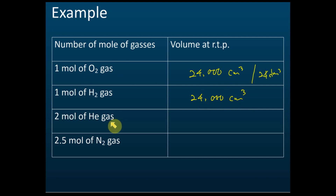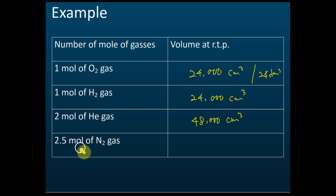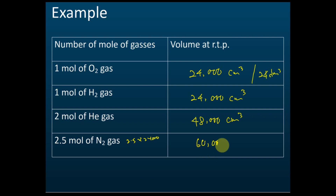Two moles of helium gas at RTP gives 48,000 cm³. You don't need to know what kind of gas it is — as long as it's a gas, one mole is always 24,000 cm³ and two moles is always 48,000 cm³ at RTP. For 2.5 moles of nitrogen gas: 2.5 × 24,000 = 60,000 cm³, or 60 dm³.